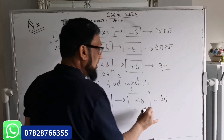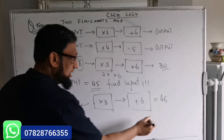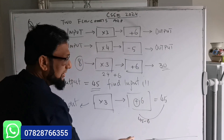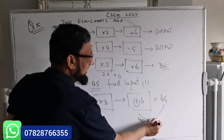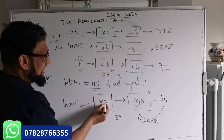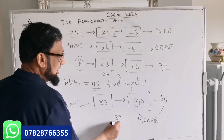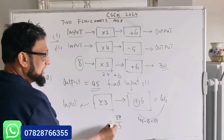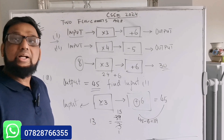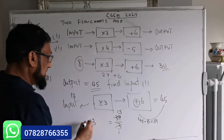For backward calculation, the operations become inverse. The last operation is plus 6, and its inverse is minus — so 45 take away 6 equals 39. Before that was times 3, and its inverse is divide — so 39 divided by 3 equals 13. So the input is 13. You can verify: 13 times 3 is 39, and 39 plus 6 is 45. Correct!